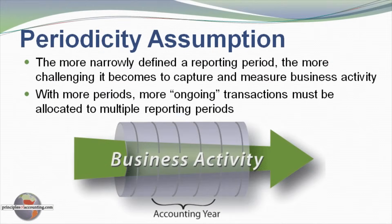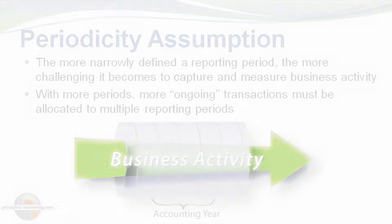The periodicity assumption becomes challenging when you start dividing the life cycle of a business into smaller and smaller intervals or measurement segments. The more narrowly defined a reporting period, the more challenging it becomes to capture and measure business activities. As you have more and more periods, there are more and more ongoing transactions that need to be divided or allocated between those reporting periods.